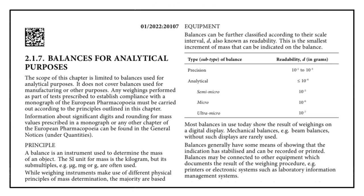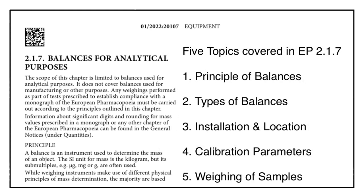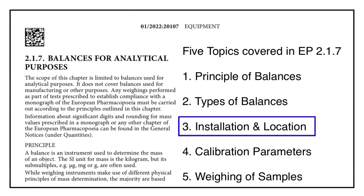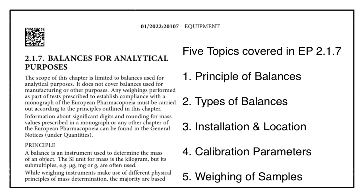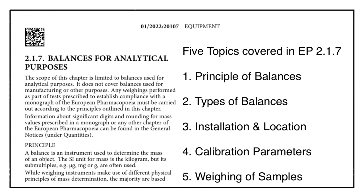EP chapter 2.1.7 covers five main topics: number one, the principle of electronic and mechanical balances; number two, types of analytical balances; number three, requirements related to installation of new balances; number four, balance calibration parameters as per European Pharmacopoeia; and number five, weighing procedures for different types of samples. Let us understand all these topics one by one.